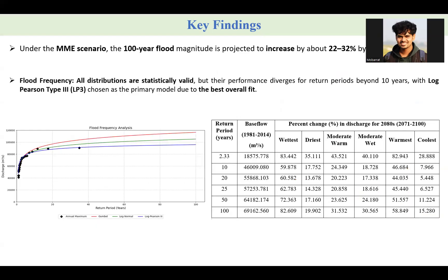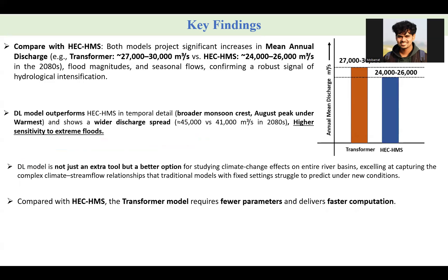The flood frequency analysis used three distributions: Gumbel, log-normal, and log-Pearson Type III. Log-Pearson Type III fits best and shows strong late-century amplification. The table shows discharge increases are more pronounced under the wettest and warmest scenarios. From the analysis, the deep learning model and HEC-HMS model agree on the same direction — more water, higher peaks, and longer high-flow sessions — but deep learning is more sensitive to climate change. Therefore, deep learning is not just an extra tool but a better option for future prediction under a changing climate.